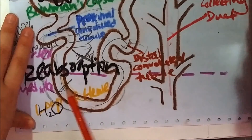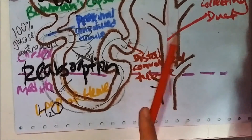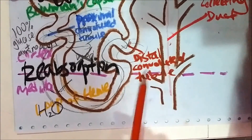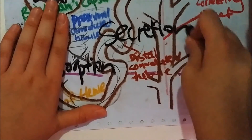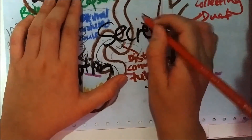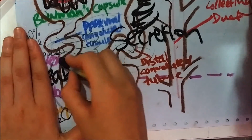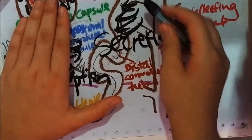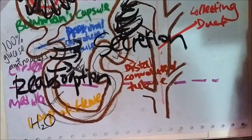The filtrate then flows into the distal convoluted tubule. Excretory substances such as urea are actively transported from the blood into the filtrate. Just now we transported glucose and amino acids out into the blood, but now we transport urea into the filtrate because we need to excrete urea out of the body.